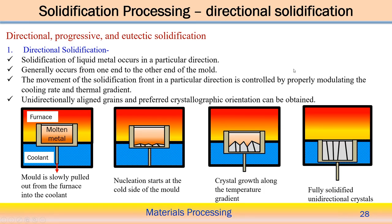There are three different types of solidification processing: directional solidification, progressive solidification, and eutectic solidification. Directional solidification means controlling the solidification growth in one particular direction. Heat must be extracted in one particular direction, promoting a high rate of heat extraction in that direction, so growth follows that direction — generally occurring from one end to the other.